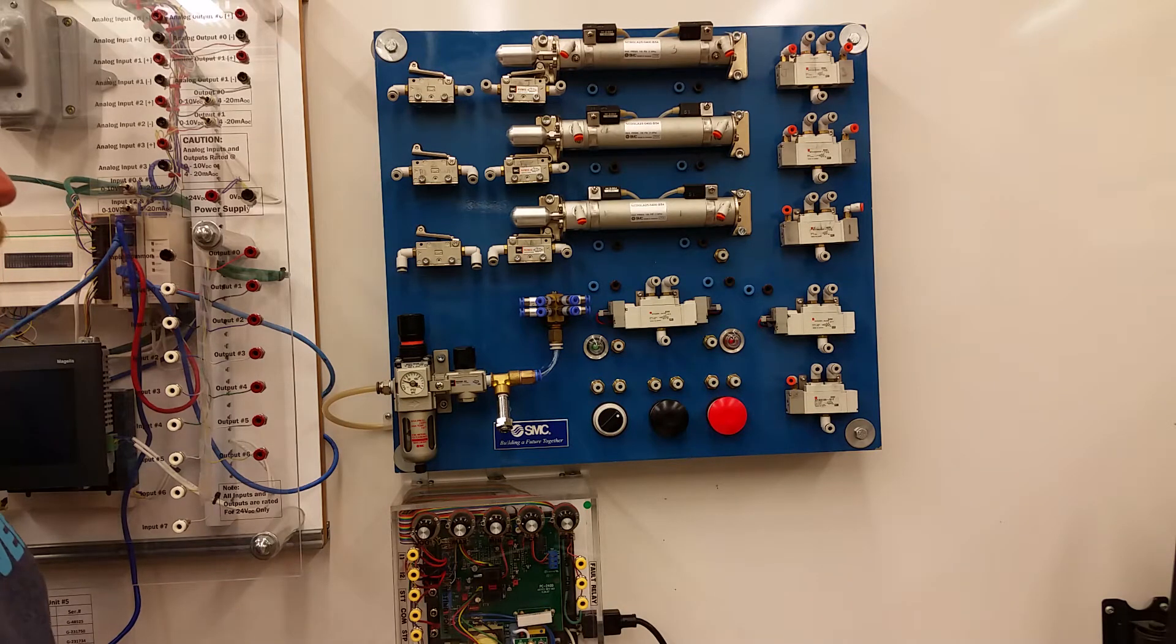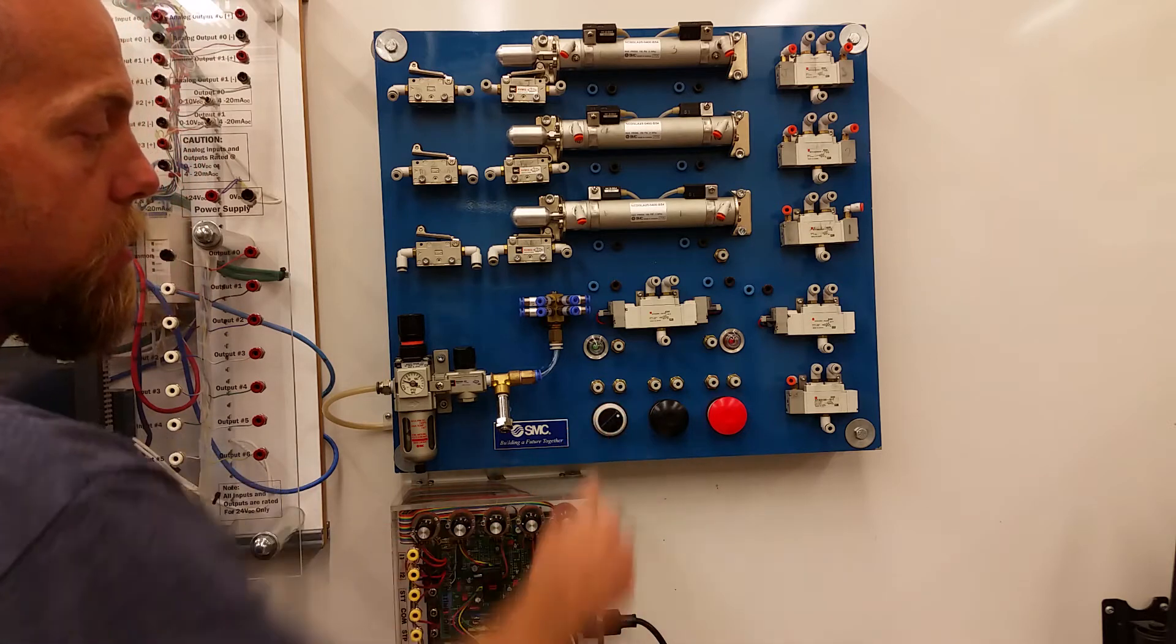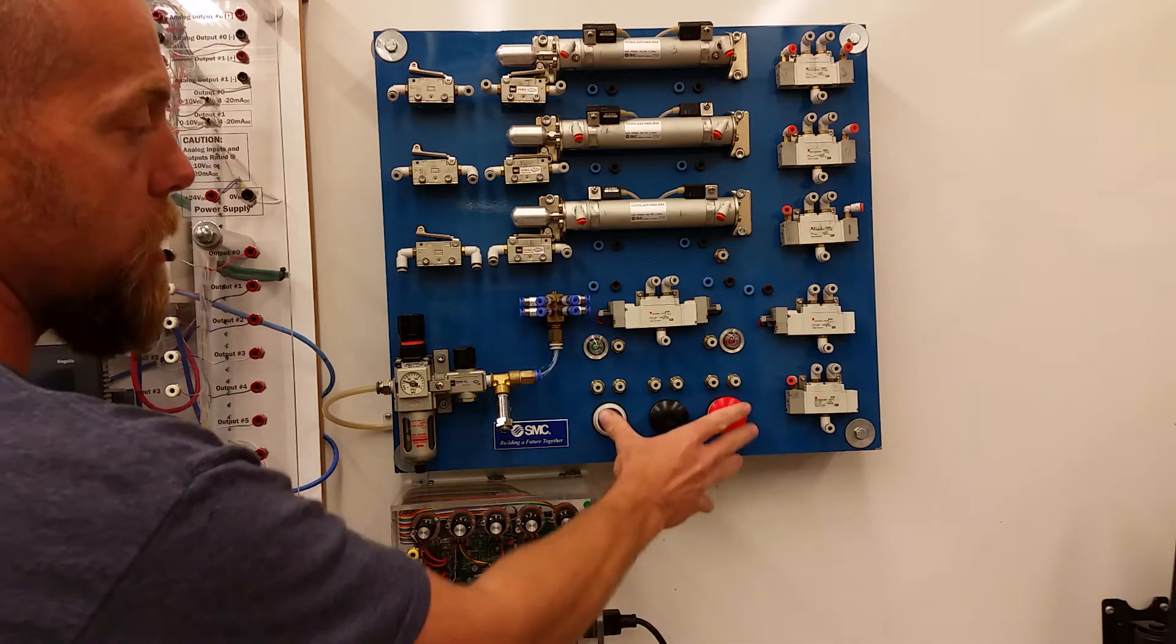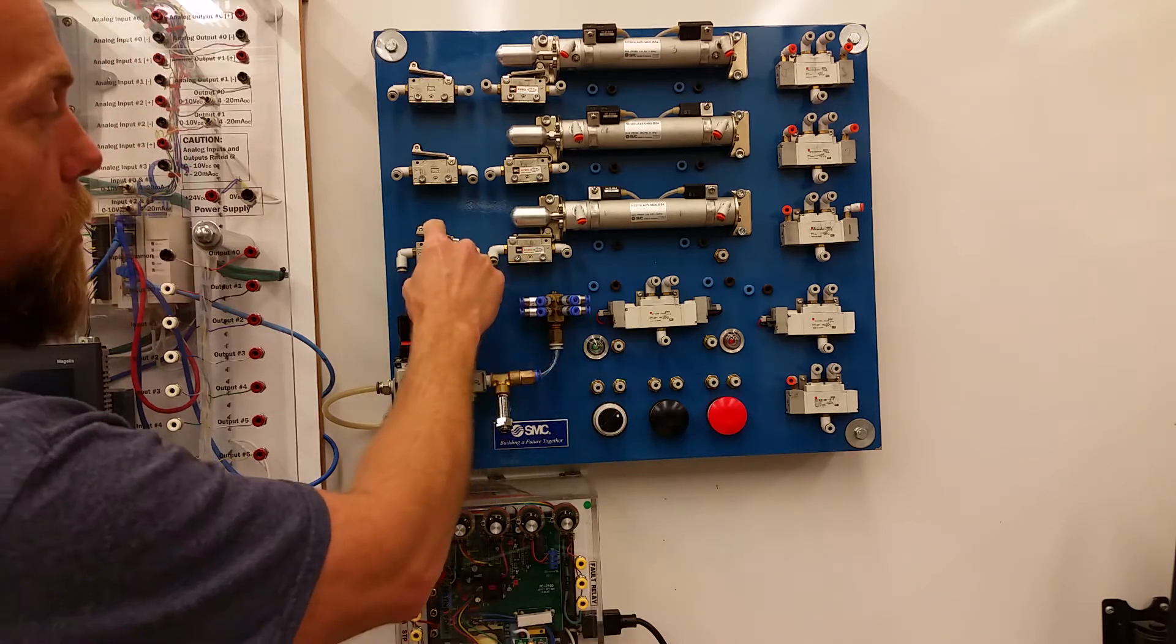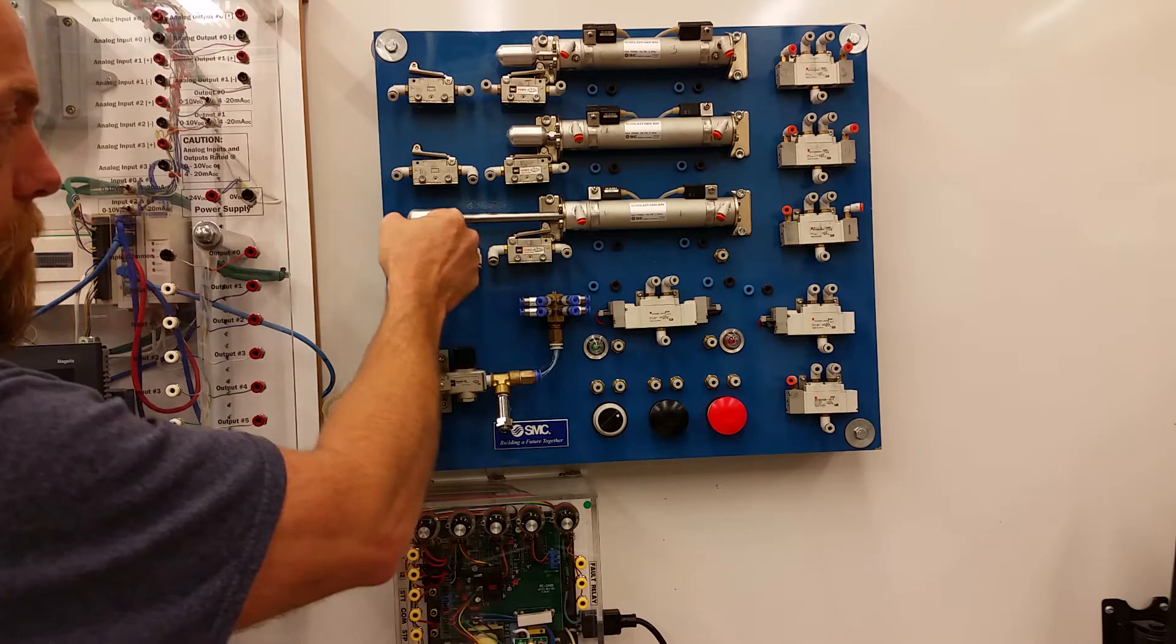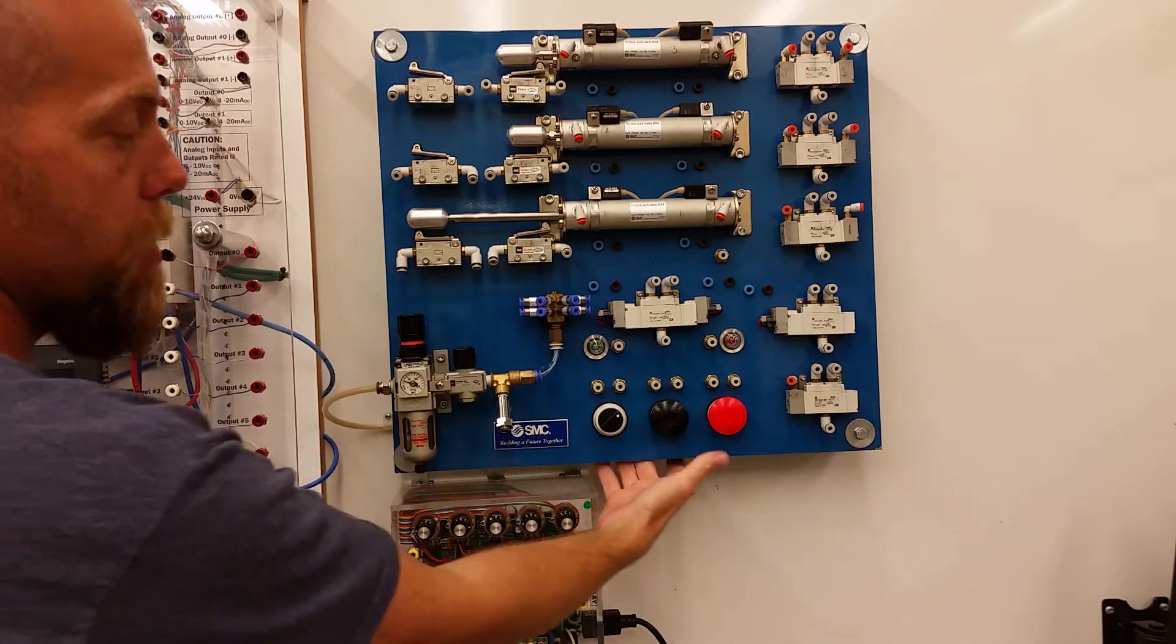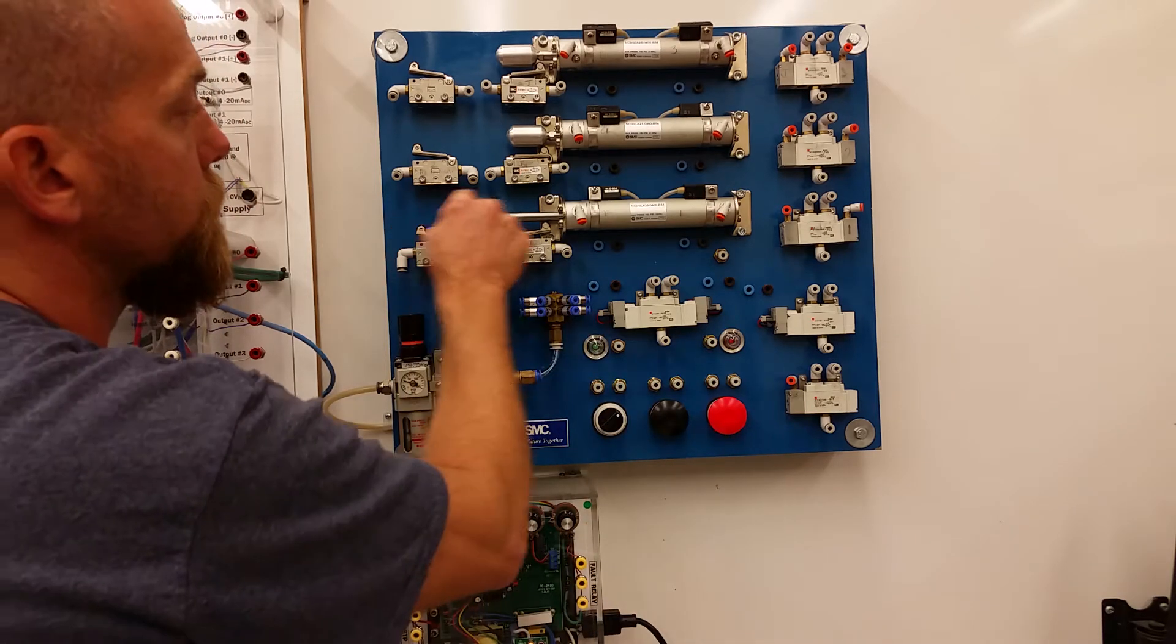Okay, the other components on this board are a selector switch. So a maintained selector switch. There are a number of push buttons here. And each of these components have the same as this below. So same as this limit switch here. It has a 3-2 valve. That 3-2 valve is also found on the back of each of these parts.